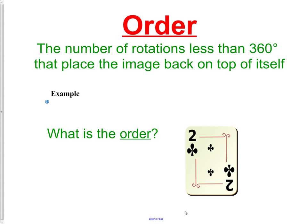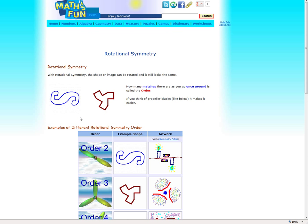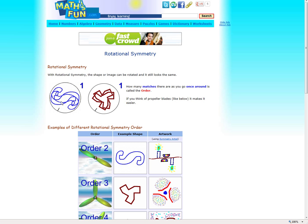Order is the number of rotations less than 360 that place the image back on top of itself. For example, what is the order of this two of clubs? As we talk about rotational symmetry and order, here we have an example. The one that looks like a sideways S has an order two. Here's the original object, and watch it count the order as it rotates. There's the first one, and there's the second one. It lands on itself twice.